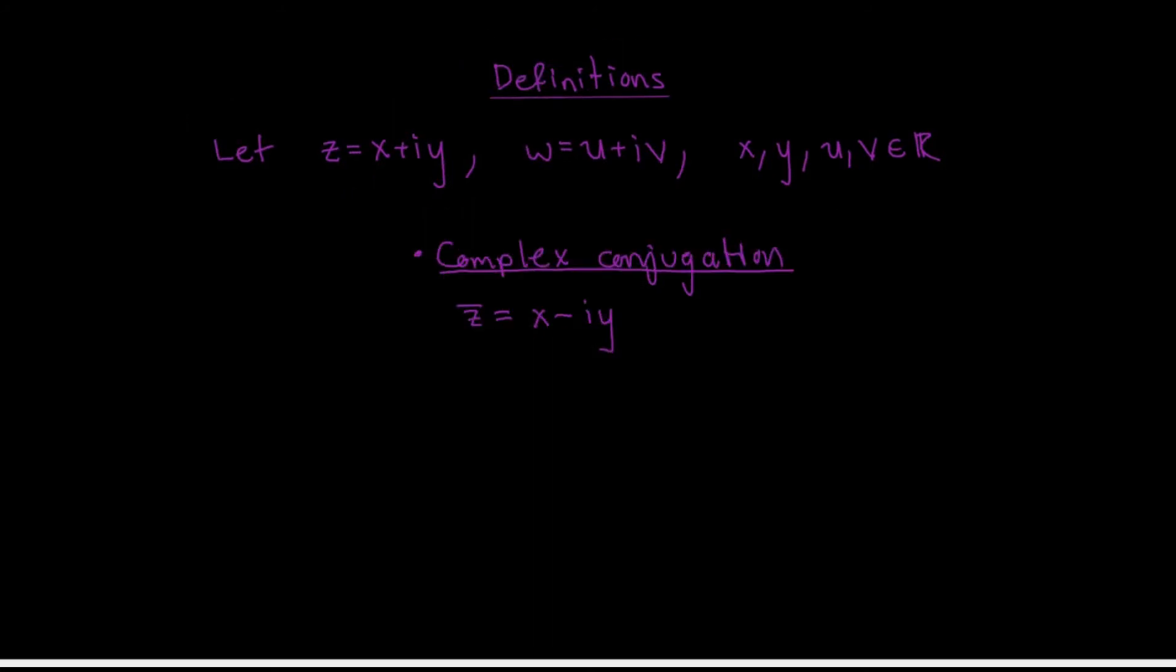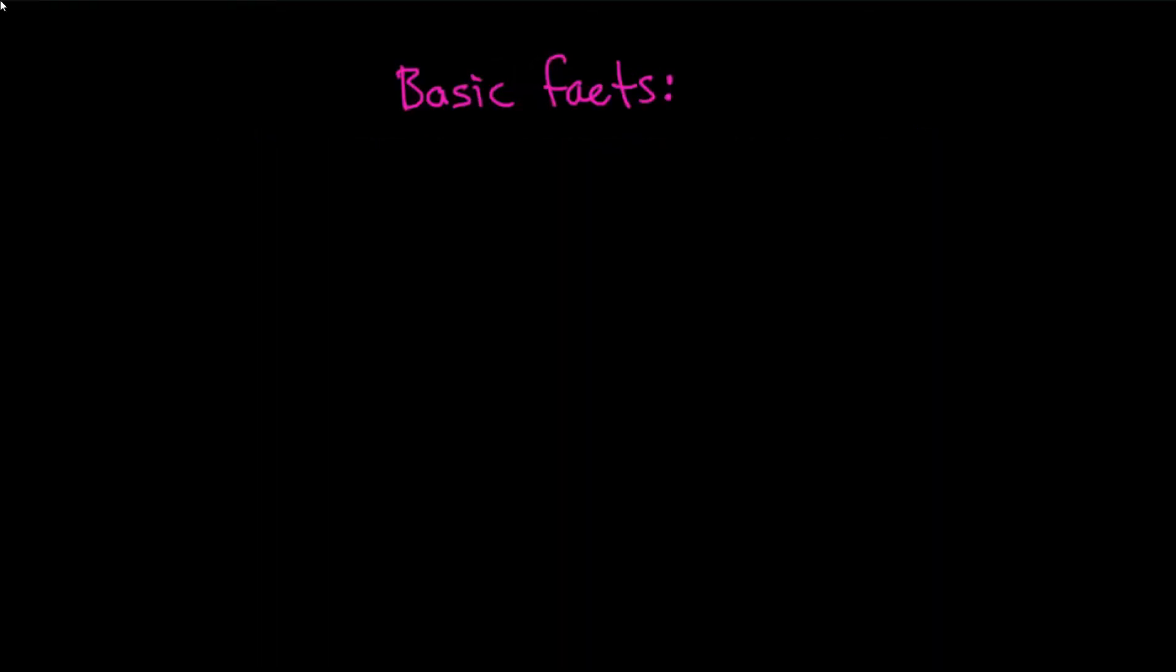A couple more important definitions before I move on. The complex conjugate of the number z that I've defined here is defined to be x minus i y, and it's denoted by z with a bar over it. The modulus of the number z is defined to be the square root of x squared plus y squared, and this is just a measurement of how large the complex number z is.